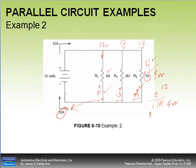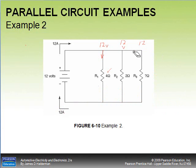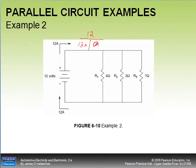We could have found this another way. Using Ohm's law: 12 volts divided by 12 amps equals 1 ohm of total resistance.